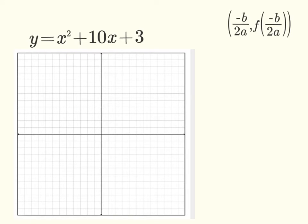So here we have our first quadratic equation. We have y = x² + 10x + 3. The first thing we're going to do is we're going to find the vertex using this formula right here. So we're going to look for H and K. So H is going to be equal to negative B over 2A, right?